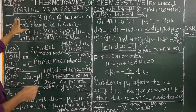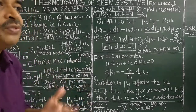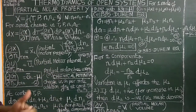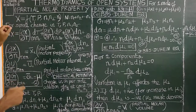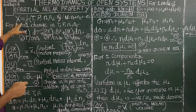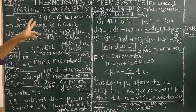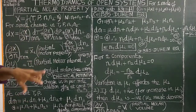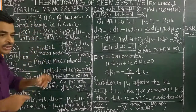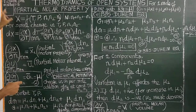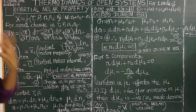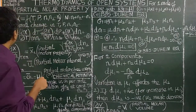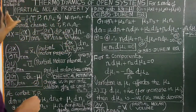Now let us consider a thermodynamic state function — Entropy, Enthalpy, Free Energy. For an open system, any thermodynamic state function X is a function of Temperature, Pressure, and the number of moles of various components present in the system, for example N1 moles of component 1, N2 moles of component 2.